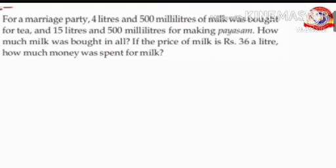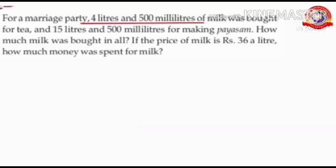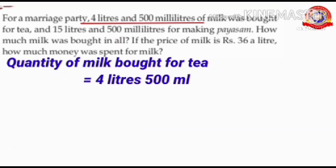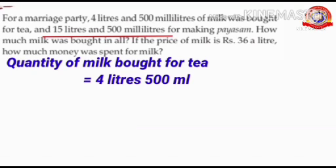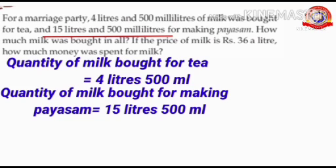How much milk was bought for tea? Yes, 4 liters and 500 ml. So, quantity of milk bought for tea equals 4 liters 500 ml. How much milk was bought for making pies? Yes, 50 liters and 500 ml. So, quantity of milk bought for making pies equals 50 liters 500 ml.